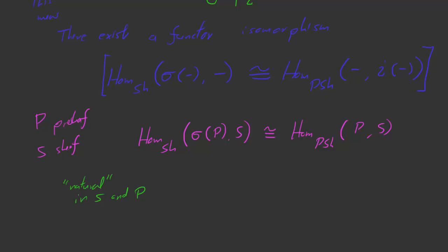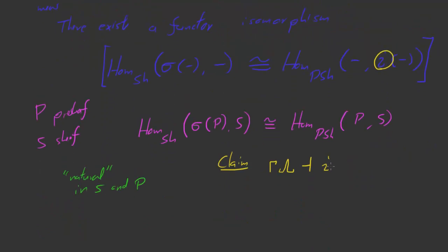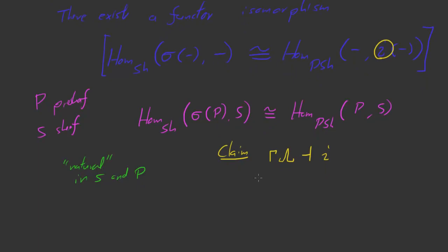So let's actually check that this is true. I claim that gamma-lambda is the left adjoint to this inclusion - the inclusion of sheaves into pre-sheaves. I claim that gamma-lambda is the left adjoint to i, and that implies that gamma-lambda is what we mean by sheafification. We define sheafification to be anything which is the left adjoint to i, and gamma-lambda is that left adjoint, so it's the sheafification functor.